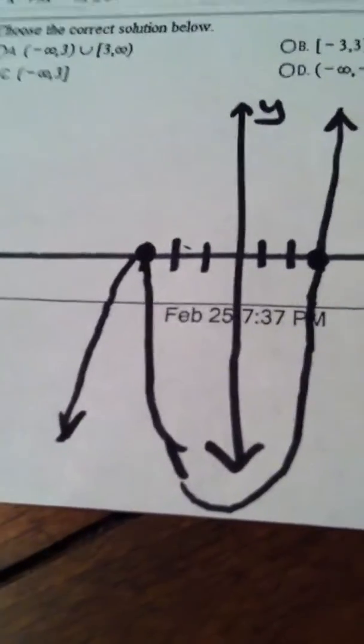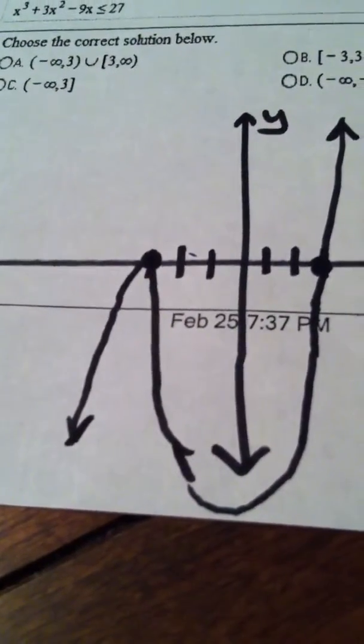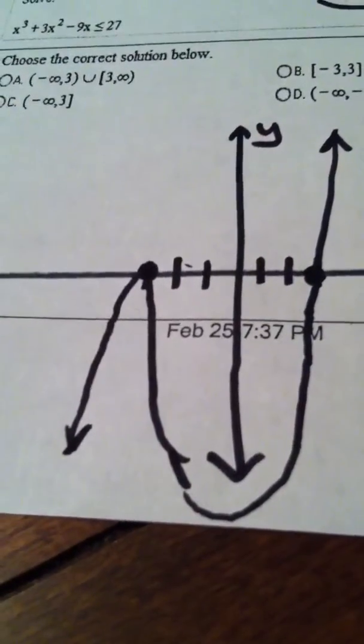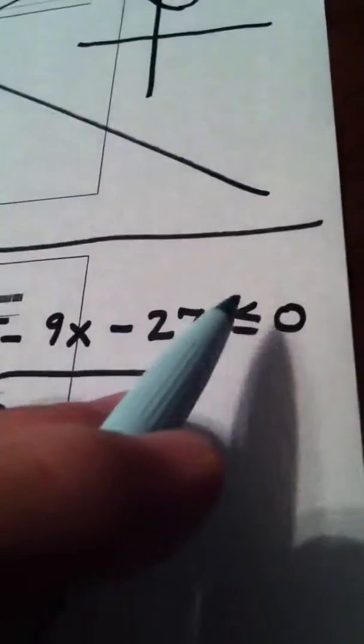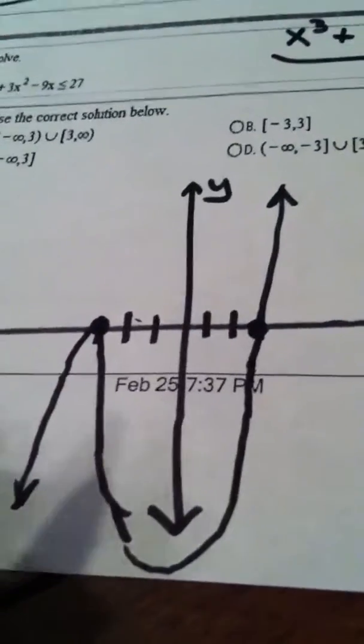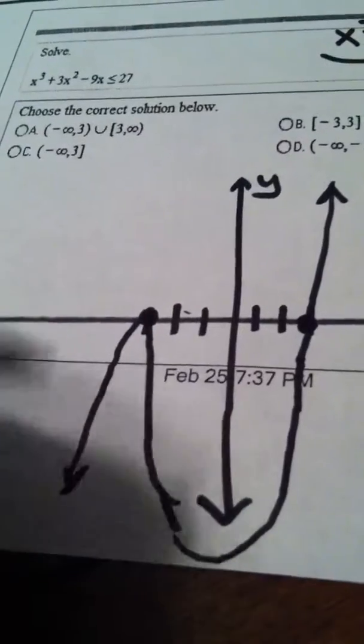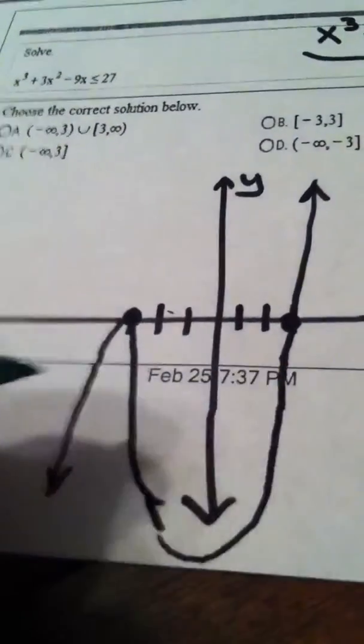I want to know, all right, I want to know where this function is less than or equal to 0. Well, if my y value is less than 0, that means I'm down in quadrants 3 or 4.